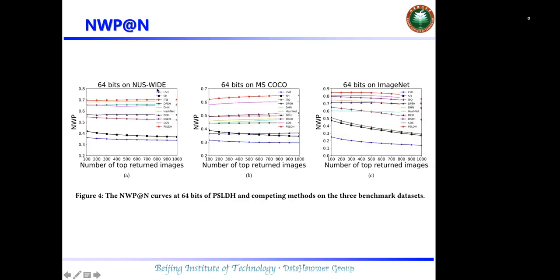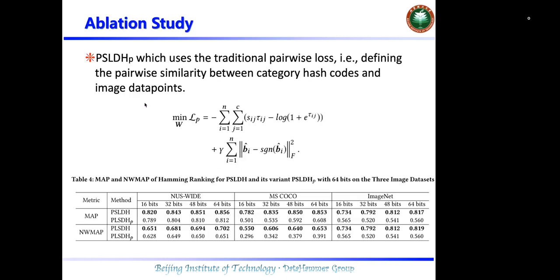This is the NWMAP results. The red line is the result of all proposed methods. It can be found that all proposed methods achieve the best performance. We also conduct experiments on the ablation study.